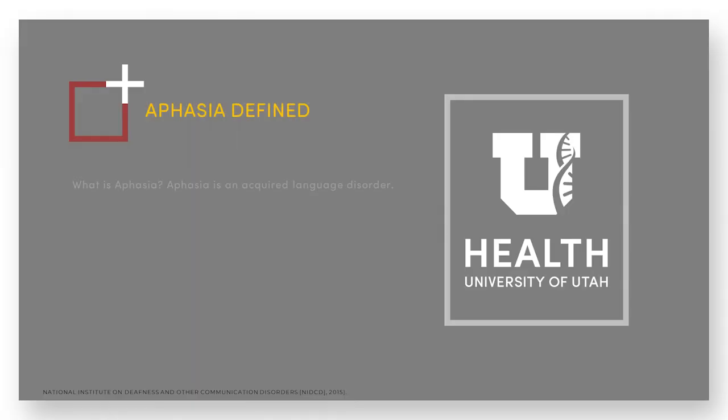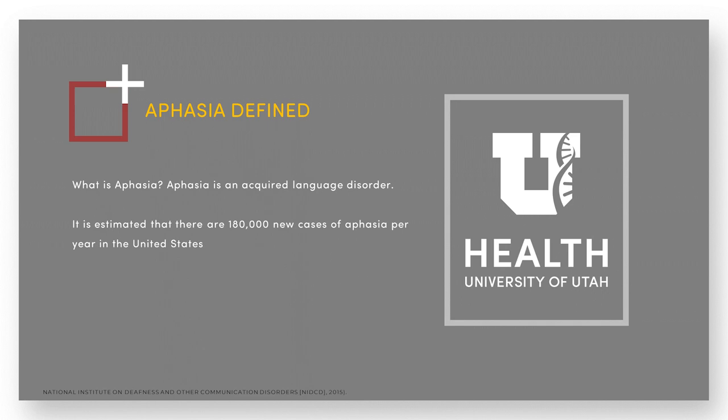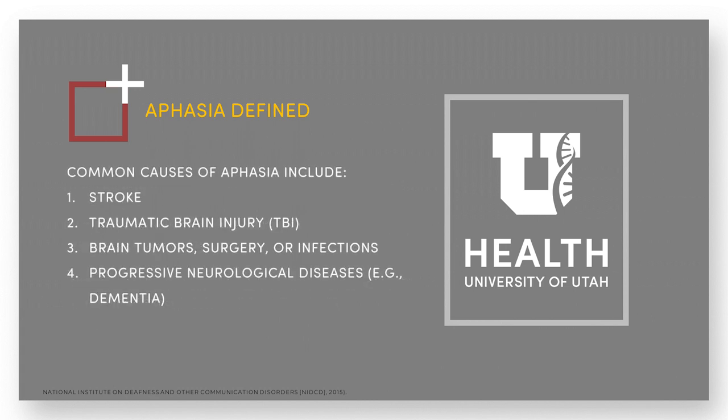What is aphasia? Aphasia is an acquired language disorder. It is estimated that there are 180,000 new cases of aphasia per year in the United States. The National Institute of Deafness and Other Communication Disorders estimates that approximately 1 million people, or 1 in 250 in the United States today, are living with aphasia.